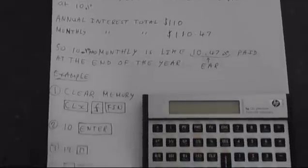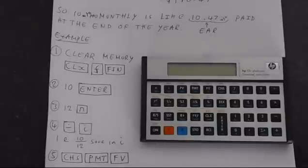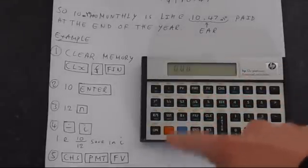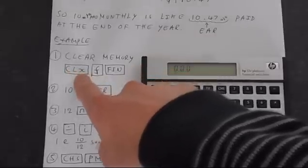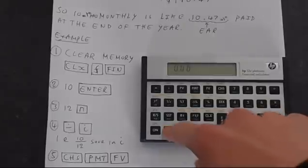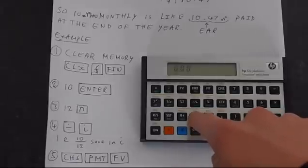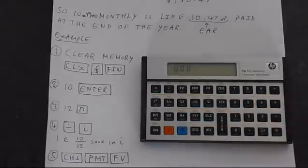The first step is to clear the memory. This memory has probably already been cleared, but I'll show you how you do it anyway. You would press clear X to clear the display, then press F, and then this X Y button which has FIN—that clears the financial memory.